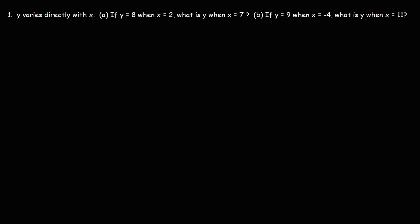In this video we're going to talk about direct variation. What is that? Direct variation is the relationship between two variables, in this case X and Y.